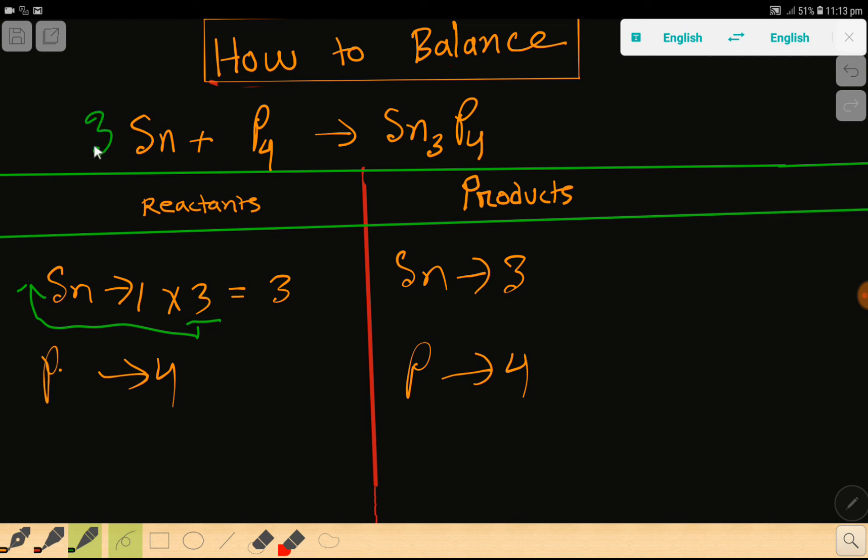Right, so the number of tin is 3. Now look: 3 tin, 3 tin, 4 phosphorus, 4 phosphorus. Everything is balanced, so you can say that this is the balanced chemical reaction.